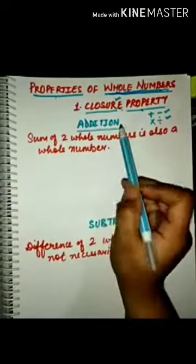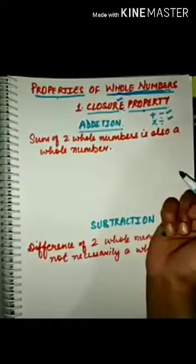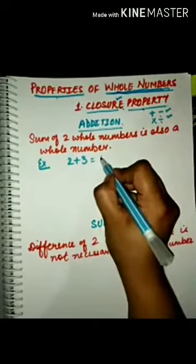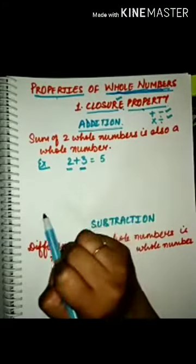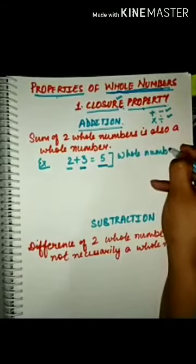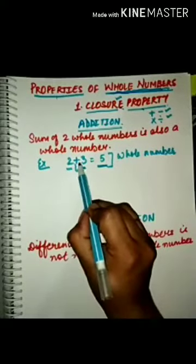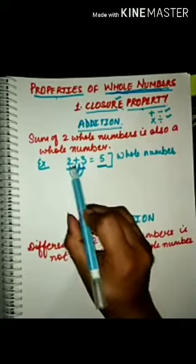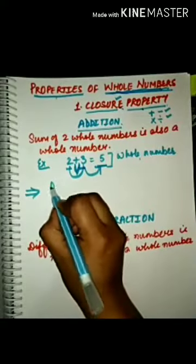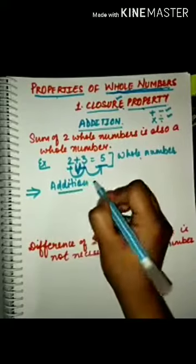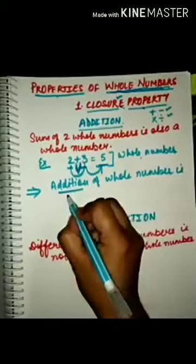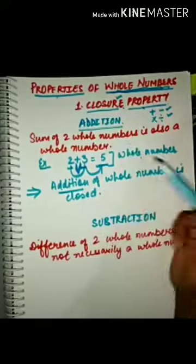For addition, the sum of two whole numbers is also a whole number. For example, 2 plus 3 equals 5. When I added these two whole numbers, the answer was again a whole number, because 5 is also a whole number. That means when we apply the mathematical operation of addition on two whole numbers, the answer is again a whole number. So we can conclude that addition of whole numbers is closed — closure property holds good for addition of whole numbers.